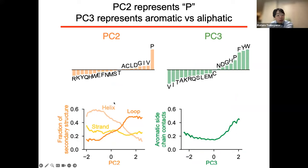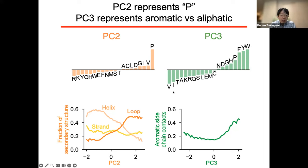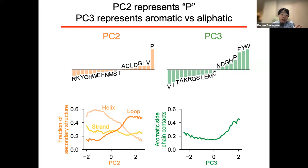I'd like to talk about PC2 and PC3. In PC2, we could clearly see that PC2 represents the preference for proline. Indeed, PC2 is also highly correlated with the fraction of loop structure. This is reasonable because proline tends to destroy helices or strands. In PC3, we could see aromatic amino acids show positive values, while aliphatic amino acids such as valine or isoleucine show negative values. PC3 is correlated with the number of side-chain contacts of aromatic amino acids. So PC3 basically represents the preference for aromatic amino acids over aliphatic ones. This suggests that aromatic amino acids tend to be clustered in several regions rather than spreading throughout the whole domain, probably because aromatic amino acids can form pi-stacking interactions between them.